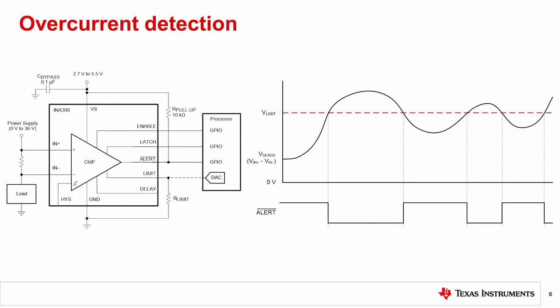In many cases, current sense amplifiers are used to check for overcurrent conditions. Here is a common implementation of overcurrent detection using the INA300, a current sense comparator. The overcurrent limit can be set using an external R-limit resistor, as well as a DAC or other voltage source.